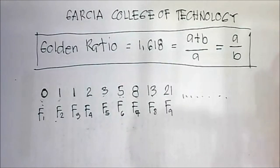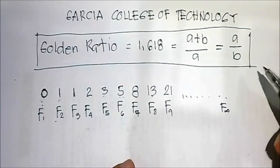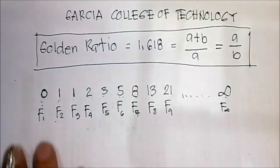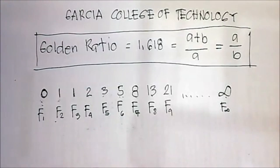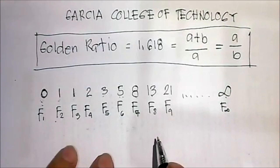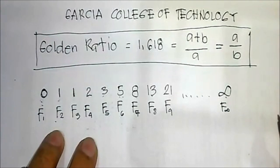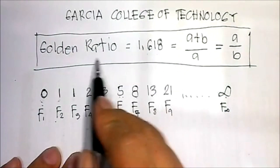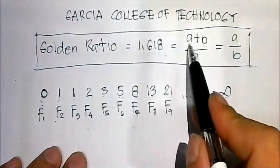As you approach infinity, that is the Fibonacci sequence. As the numbers increase and the pattern increases, the Golden Ratio approaches 1.618.